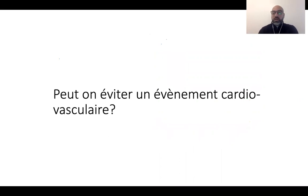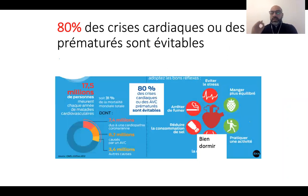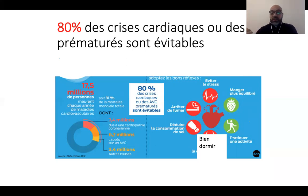Peut-on éviter un événement cardiovasculaire ? Oui : 80% des syndromes coronaires aigus et des AVC sont évitables grâce aux actions que nous allons faire. Si vous avez du cholestérol, il faut l'abaisser par les règles hygiéno-diététiques et les thérapeutiques. Le tabac, ennemi public numéro un : en Europe et aux États-Unis, dès qu'il y a eu une interdiction de fumer dans les lieux publics au début des années 2000, il y a eu une réduction de 40% des événements cardiovasculaires quelques années après.